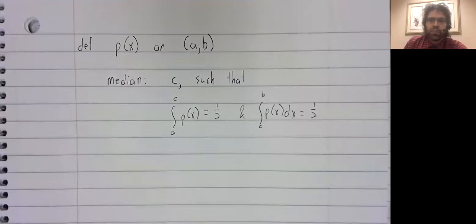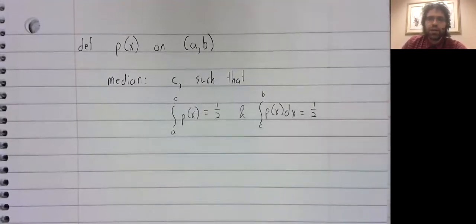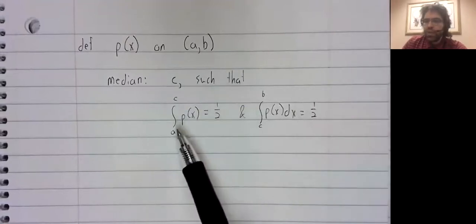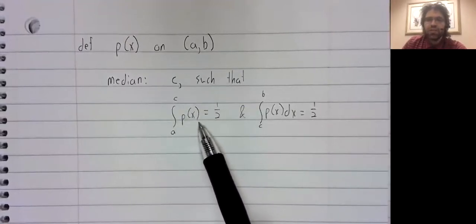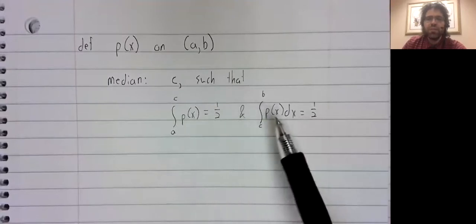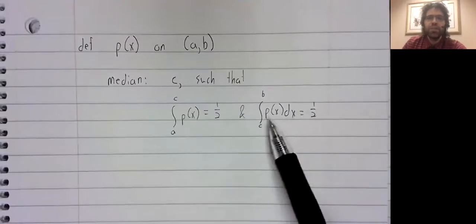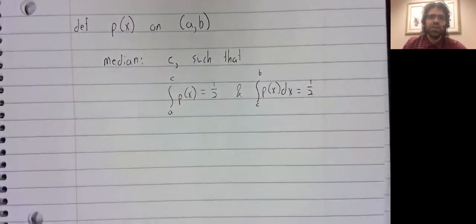similar. It's the number C, such that a randomly selected variable is 50% likely to be less than C and 50% likely to be greater than C.